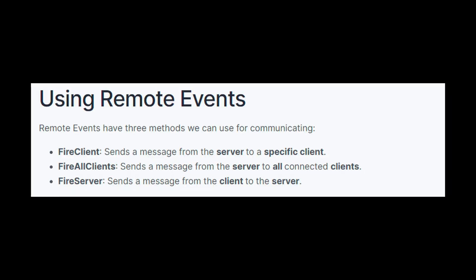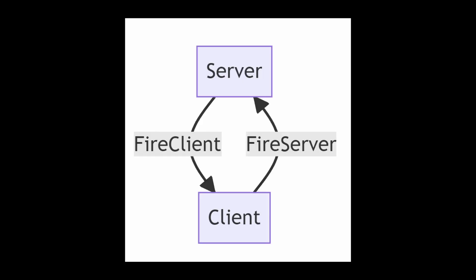When it comes to using remote events, these objects have three methods we can use for communication. The first method is FireClient, which will send a message from the server to one specific client. We then have FireAllClients, which sends a message from the server to every single client currently connected to our game. Then we also have FireServer, which sends a message from the client to the server. So if we're on the server side and want to communicate with one specific client, we use FireClient. If we're on the client side and want to communicate to the server, we use FireServer.